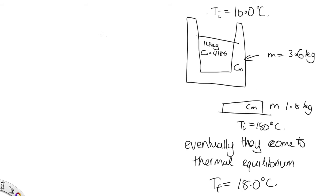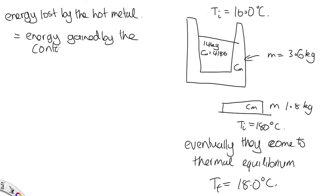So the energy lost by the hot metal is equal to the energy gained by the container plus water. Now I just need to put a little negative sign there as lost energy is going to be negative. So we'll need other negatives to cancel out.